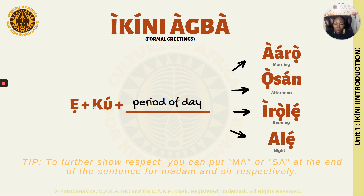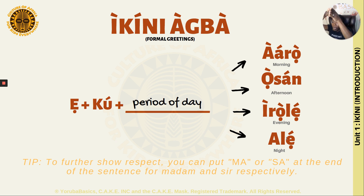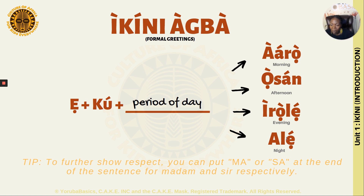So you would say EKURO, and then if it's morning, you say ARO — EKU ARO. EKU OSON. EKU EROLE. And then EKU ALE. Remember: E is the pronoun, KU is what they're doing, and the time of day. You're greeting them — like, I'm acknowledging you this morning, I'm acknowledging you this afternoon, this evening, this night.